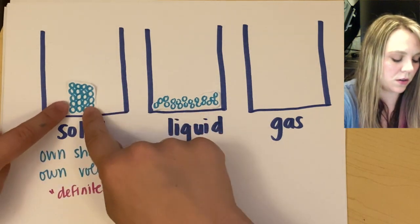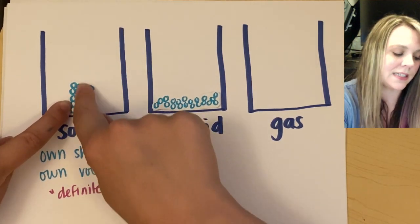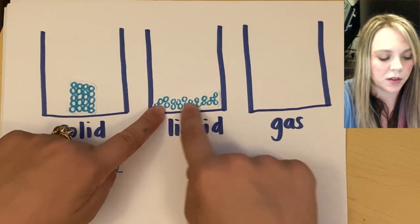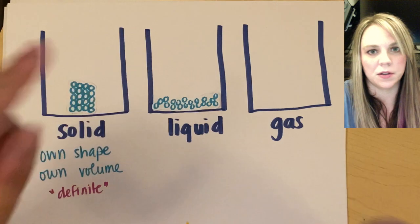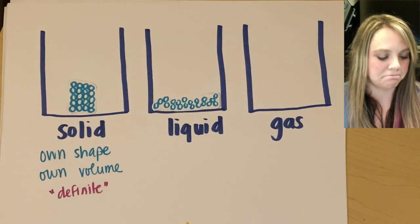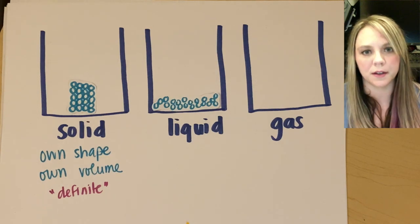it will kind of slush around until it takes up the shape of the container at the bottom. So if you notice, right, solid particles are stacked nice and neatly on top of each other, very compact. Liquid particles still pretty close together, but they're not stacked in these nice little rows. You know, they're close, but they're kind of fluid. All right.